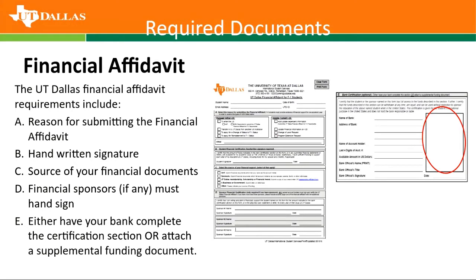One of the required documents for showing your funds is the UT Dallas financial affidavit. The required fields of this form are: first, your reason for submitting — as an initial student entering the U.S. for the first time, that is the particular box you would check in the first section. Then you, as the student, will sign and date the second section of this form. If you have any sponsors willing to help you pay for your expenses, their names, signatures, and the date need to be in the sponsor section. There is also an optional section that your bank can fill out to show the current funds in your bank accounts.